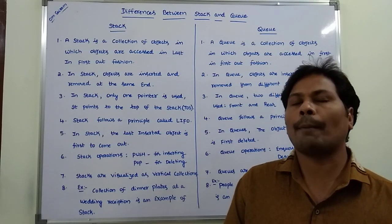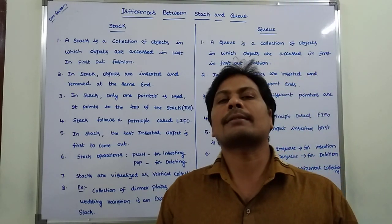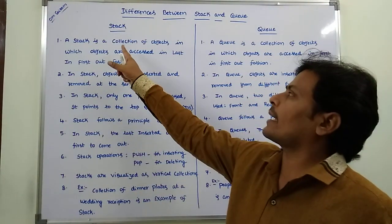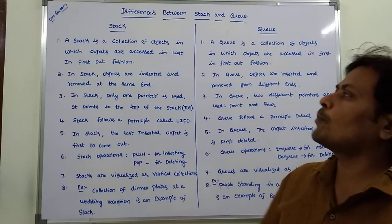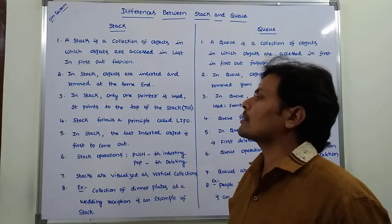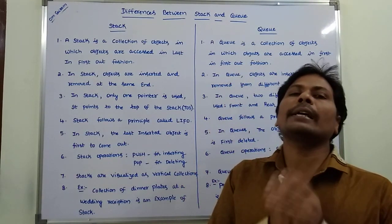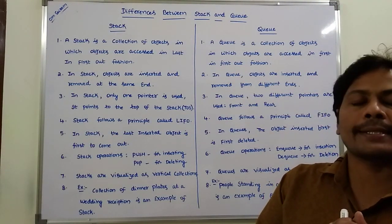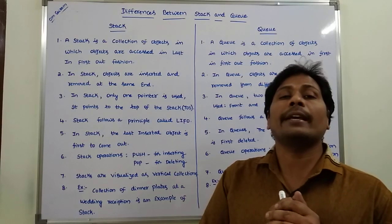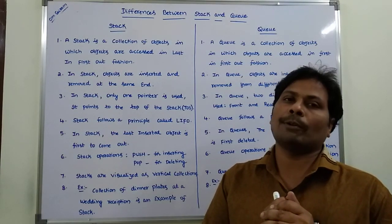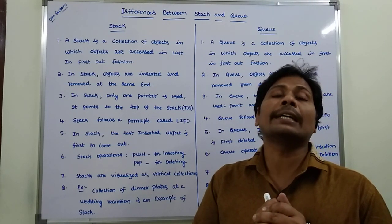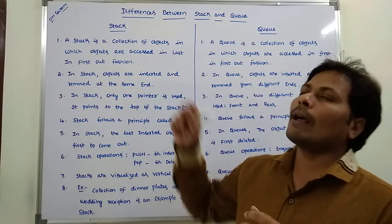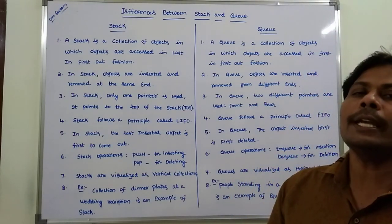Now we will discuss some differences between stack and queue. First, a stack is a collection of objects in which objects are accessed in last in first out (LIFO) fashion. Whatever element is entered last, that element is deleted first — this is the principle called last in first out.